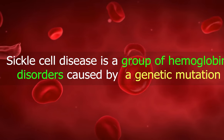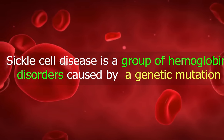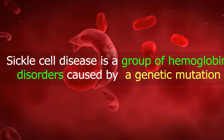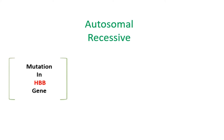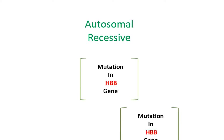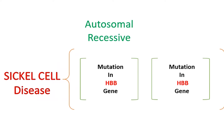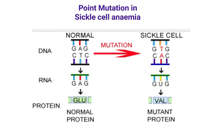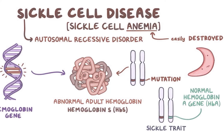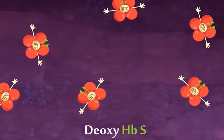Sickle cell disease is a group of hemoglobin disorders caused by a genetic mutation. This mutation, which shows an autosomal recessive inheritance, causes an amino acid of the beta globin chain — glutamate — to be substituted by another amino acid, valine, changing the physical properties of the whole hemoglobin molecule. The resulting molecule is known as hemoglobin S.